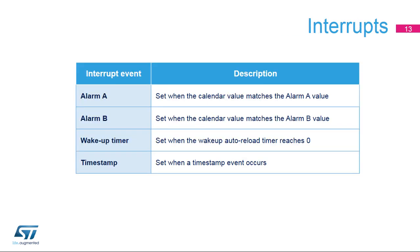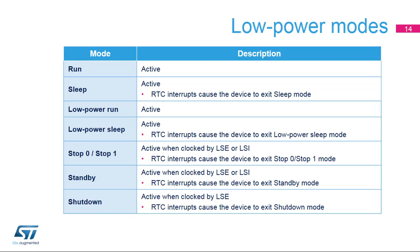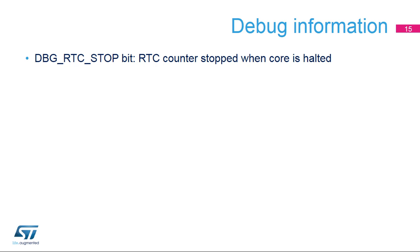Several RTC events can generate an interrupt. All interrupts can wake the microprocessor up from all low-power modes. The alarm A interrupt is set when the calendar value matches the alarm A value. Similarly, the alarm B interrupt is set when the calendar value matches the alarm B value. The wake-up timer interrupt is set when the wake-up auto-reload timer reaches 0. The timestamp interrupt is set when a timestamp event occurs. The RTC peripheral is active in all low-power modes, and the RTC interrupts cause the device to exit the low-power mode. In stop 0, stop 1, and standby modes, only the LSE or LSI clocks can be used to clock the RTC. Only the LSE is functional in shutdown mode because this oscillator belongs to the VBAT domain. A bit is available in the MCU debug interface in order to stop the RTC counter when the core is halted for debugging.